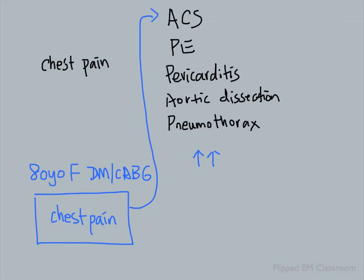After you finish with ACS, you then move on to PE. You can say that the patient does not have any risk factors for pulmonary embolism, such as immobilization, cancer, or family history. You may also say that the pain is not pleuritic and there is no associated shortness of breath. You then move through each deadly diagnosis until you've exhausted the list.